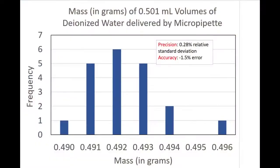To illustrate the high precision and accuracy possible with the micropipette, the mass of 0.501 milliliter volumes of room temperature deionized water was measured 20 times. The measurements show a relative standard deviation of less than 0.3% and a negative 1.5% error based upon the density of water. The accuracy of the micropipette may be improved with its periodic recalibration.